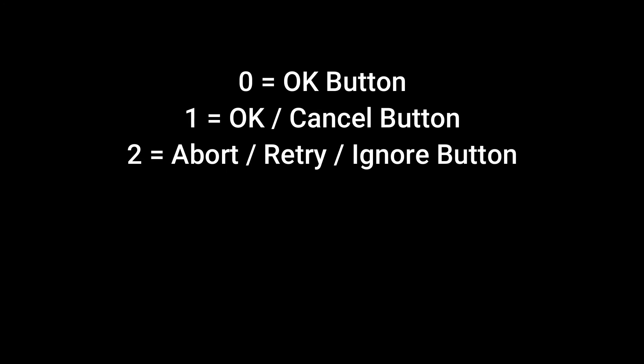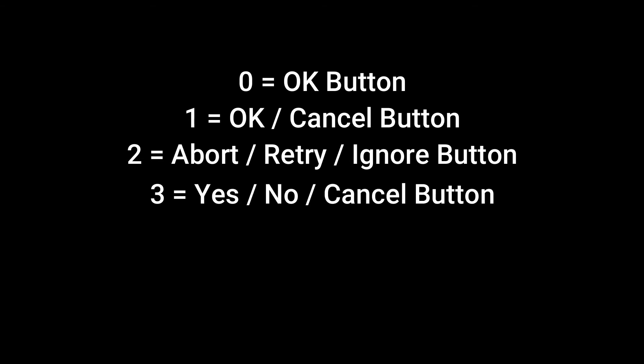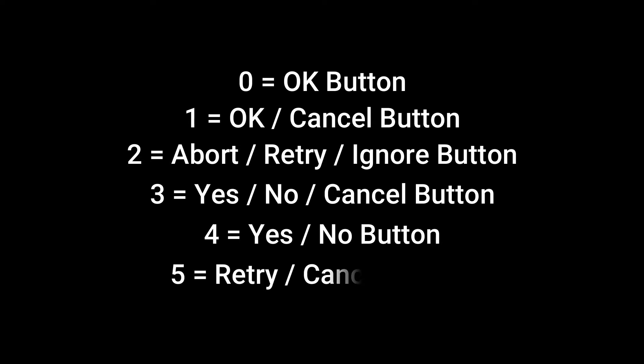Before going to the code, here are some values you should know. For the OK button in the message box, use value 0. For OK and Cancel, use value 1. For Abort, Retry, and Ignore, use value 2. For Yes, No, and Cancel, use value 3. For Yes or No, use value 4. For Retry or Cancel, use value 5. These are the button values you need when using a message box.